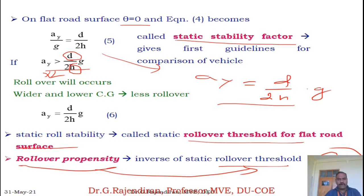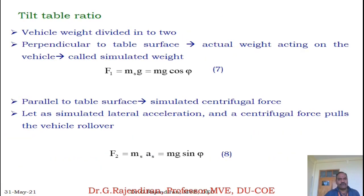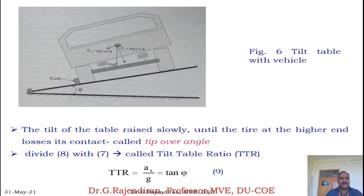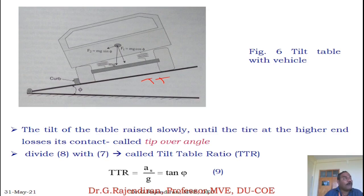Now we will go for the tilt table ratio, which is a method to find out the rollover angle of a vehicle. When placing a vehicle on a tilt table — a flat surface — a curb is provided to avoid sliding of the vehicle, arresting movement downwards.